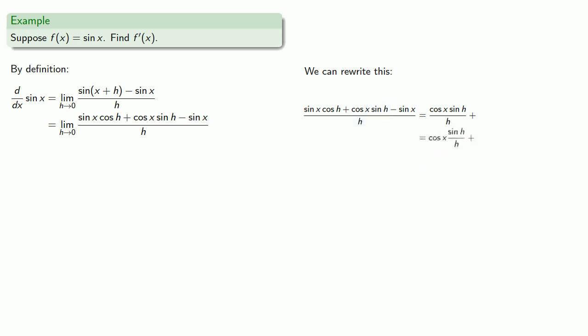And in fact, let's isolate that sine h divided by h. Now, we also have some terms left over. In this other fraction, there's a common factor of sine x we can remove, and this is a cosine h.